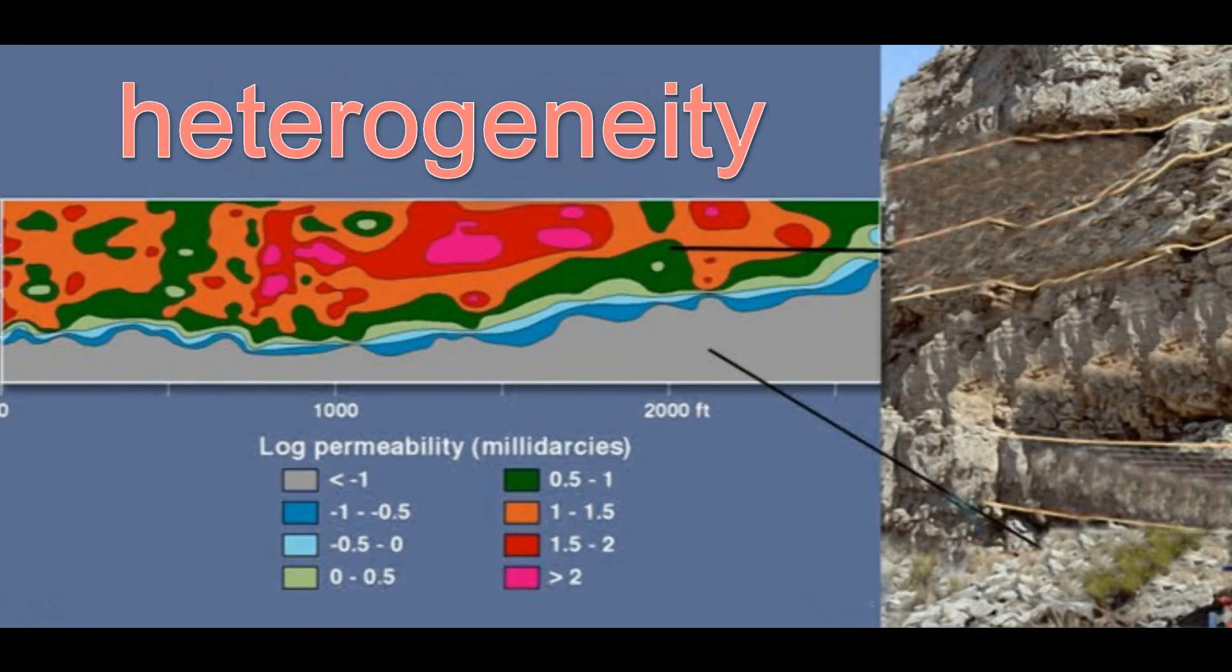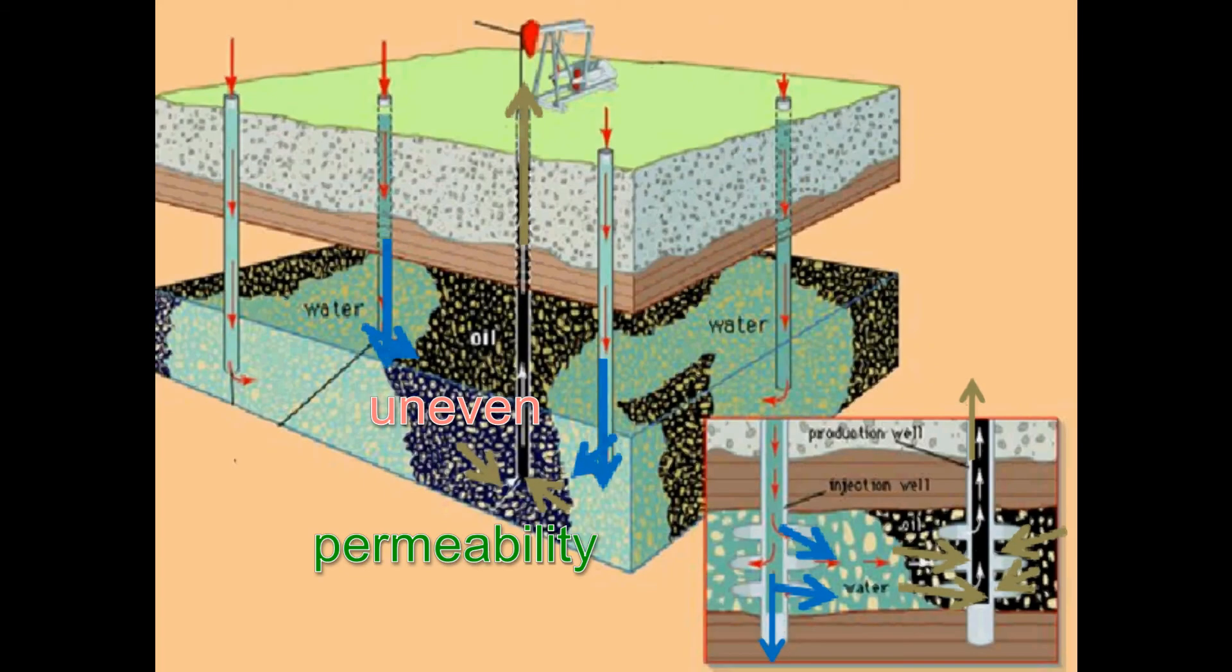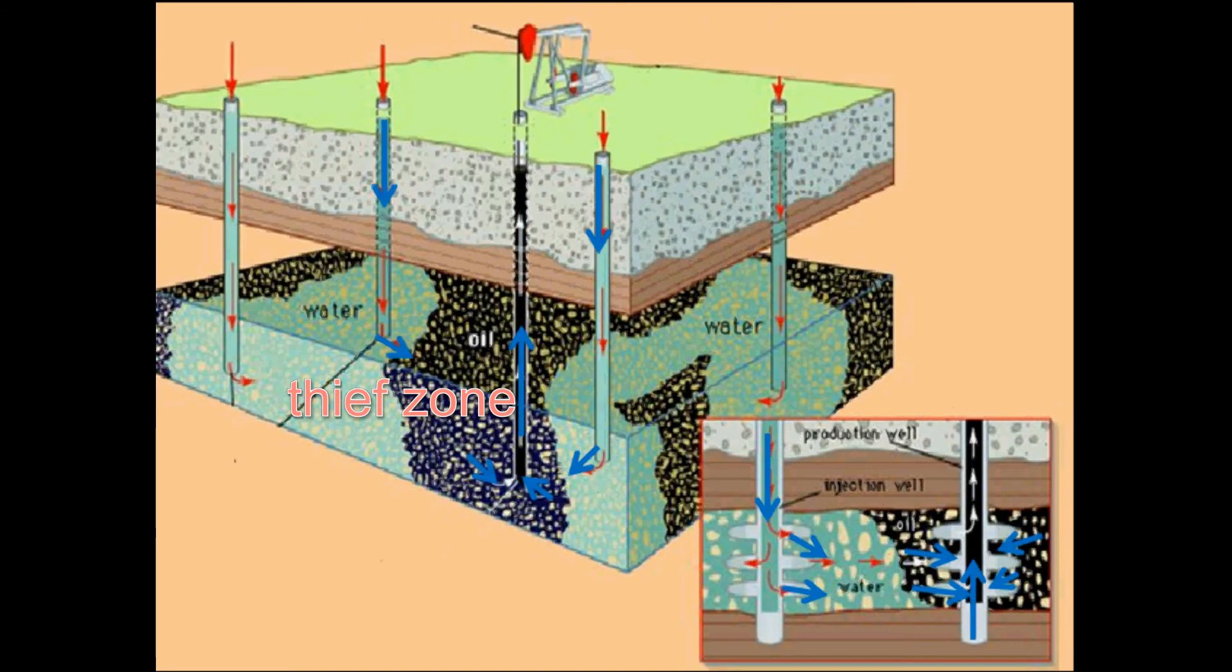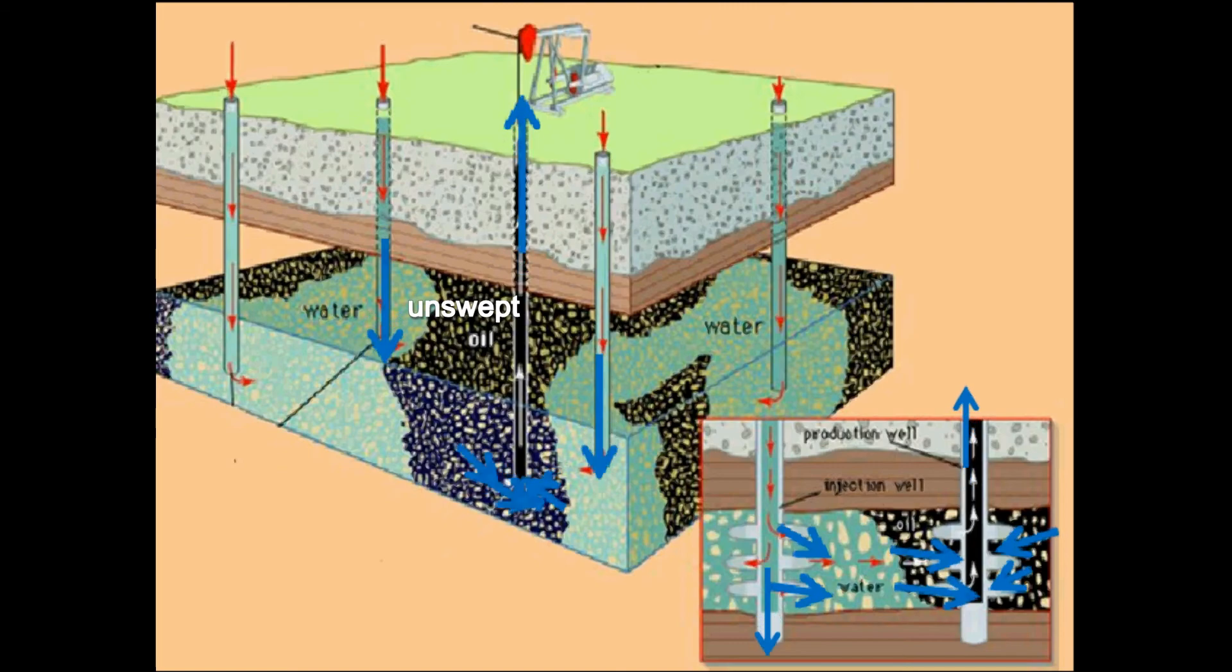Called heterogeneity, these permeable variations cause most reservoirs to water flood unevenly. High permeability zones can take more than their share of the water, which can lead to early breakthrough of water into the producing well. This early breakthrough is called a thief zone. The water literally bypasses the oil, causing it to remain or be left in the reservoir. This unproducible oil is referred to as unswept oil.